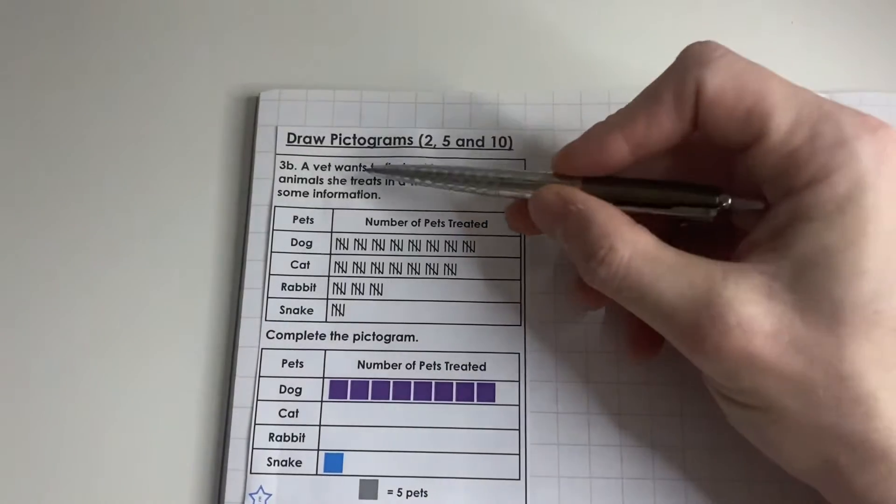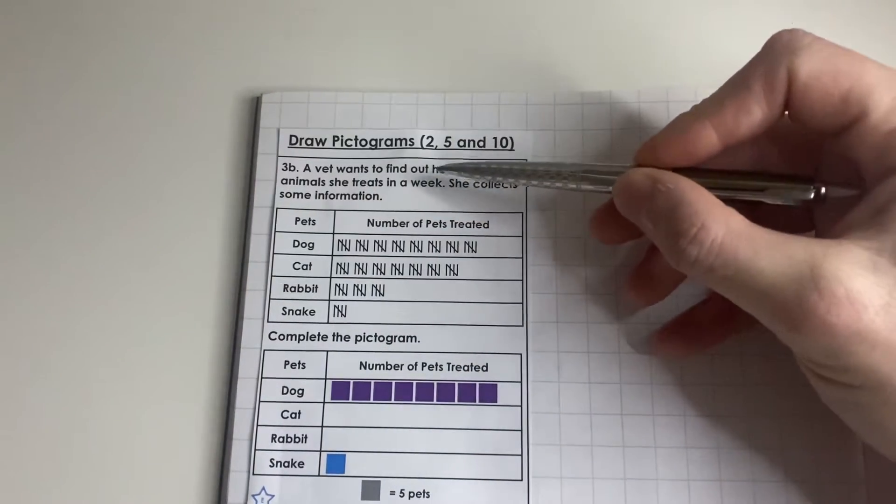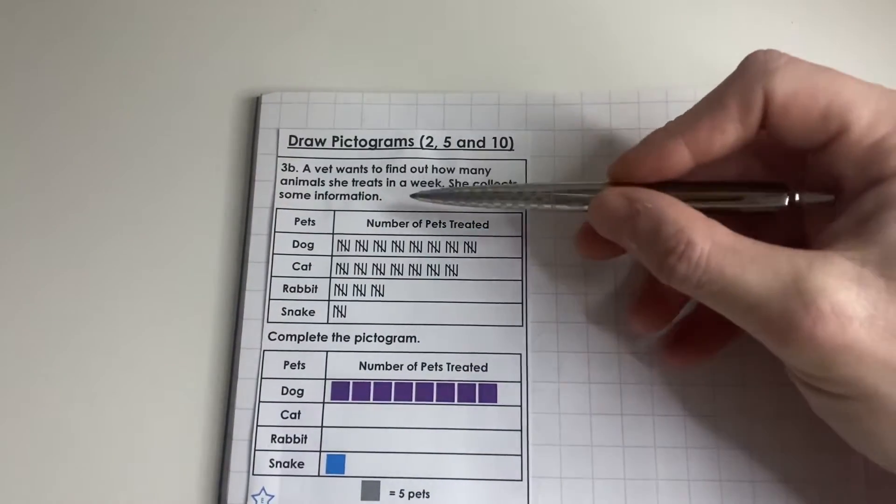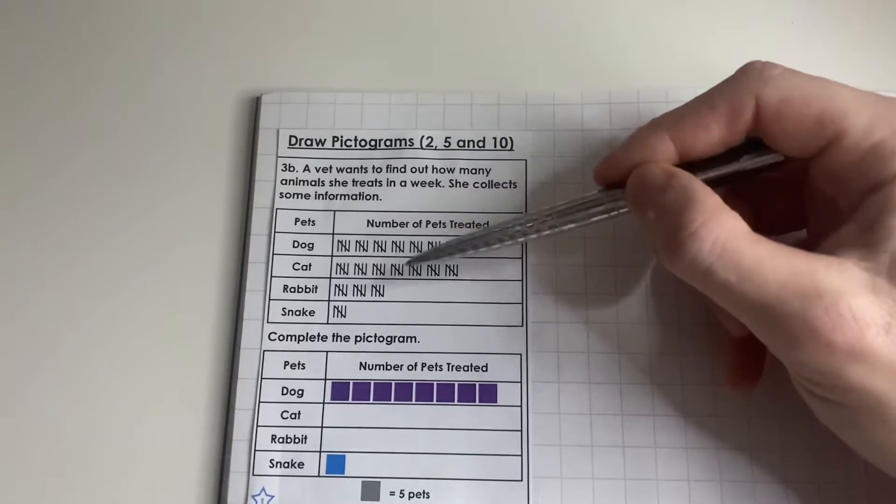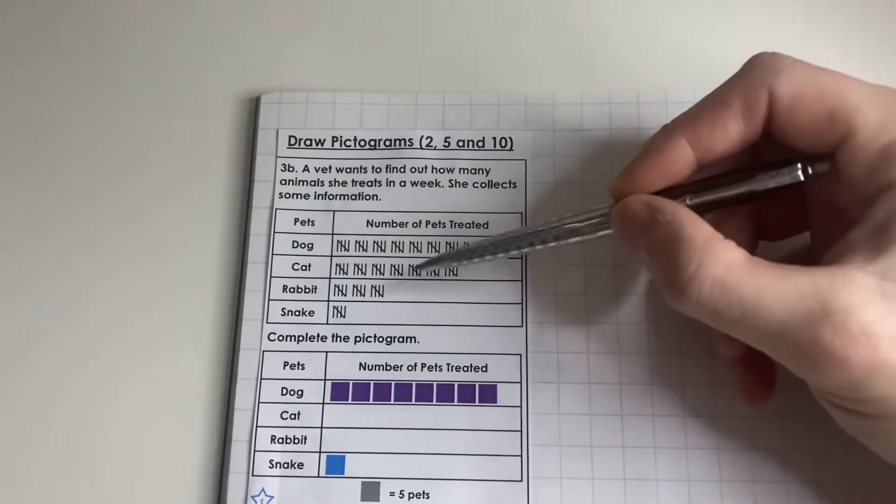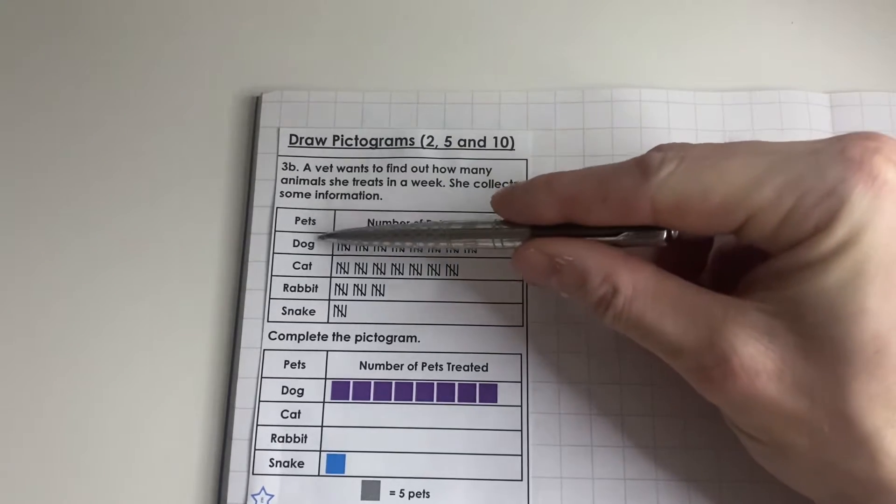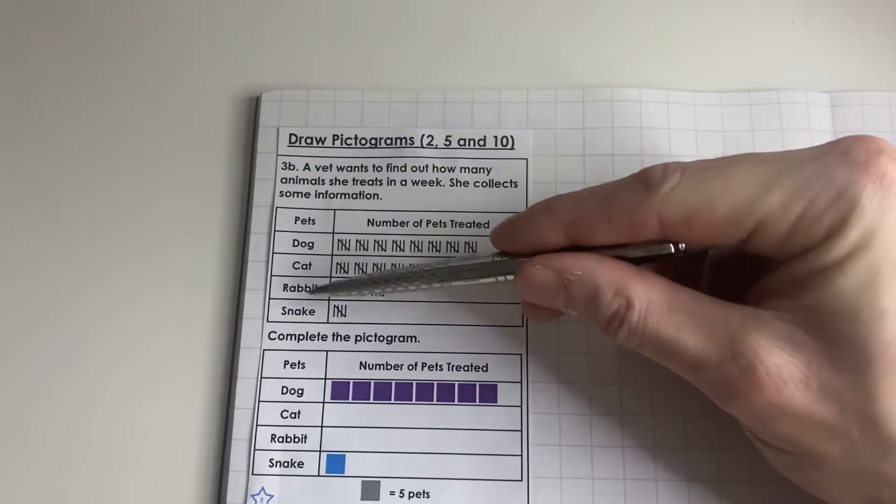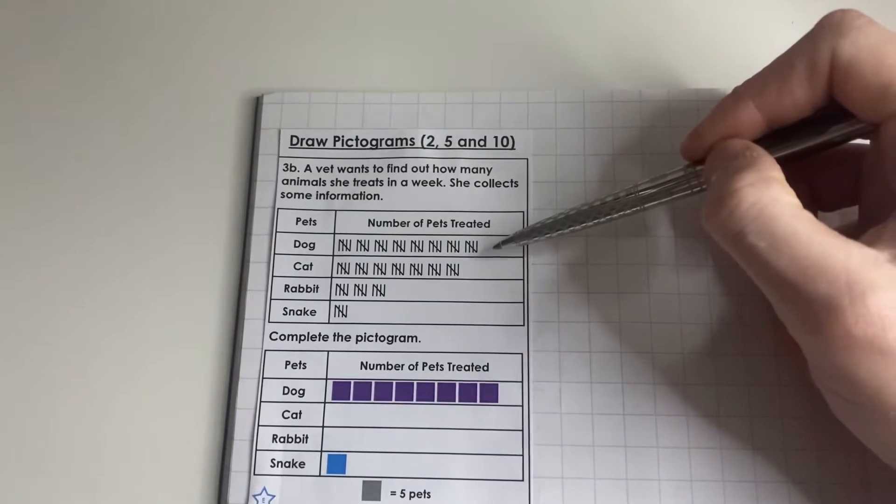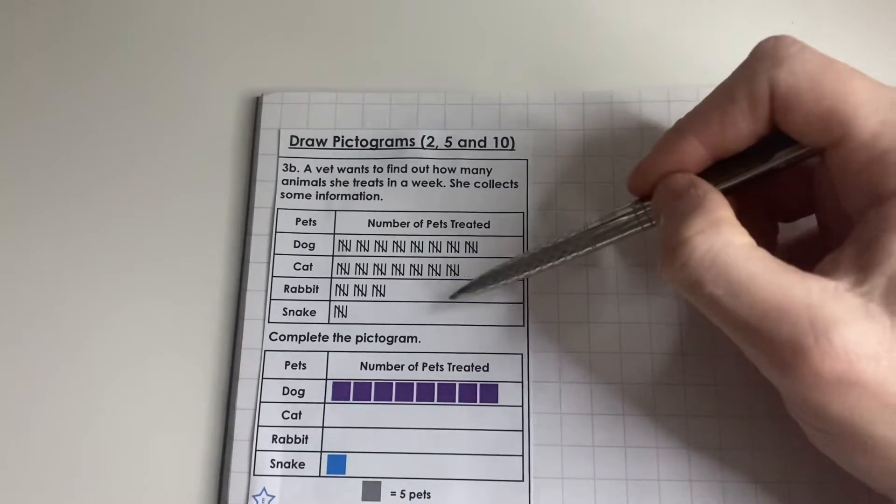We'll take the first question. A vet wants to find out how many animals she treated in a week. She collects some information. The first part she's done is collect her information in a tally chart. We've got four different types of pets: dog, cat, rabbit, and snake, and the number of pets treated.